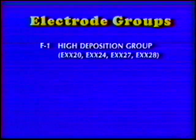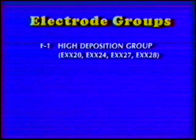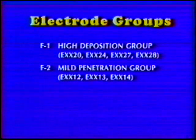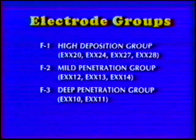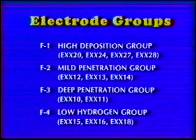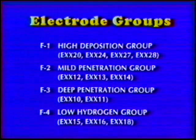Mild and low alloy steel electrodes may be classified into four groups. F1, the high deposition group: EXX20, 24, 27, and 28. F2, the mild penetration group: EXX12, 13, and 14. F3, the deep penetration group: EXX10 and 11. F4, the low hydrogen group: EXX15, 16, and 18. Electrodes in the same grouping operate and are run the same way.